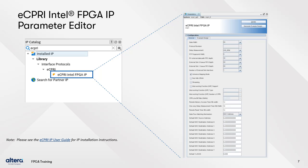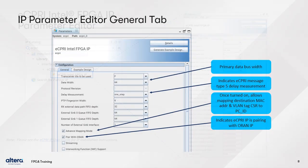After installation, the Parameter Editor is found in the IP catalog in both the Quartus Prime Pro Software and Platform Designer. Locate it under Interface Protocols and then eCPRI, or you can just type eCPRI in the search field at the top. Double-click to open the Parameter Editor. All configurable options currently available for customizing your IP instance are found on the General tab in the GUI.